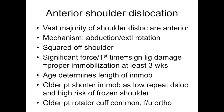How does an anterior dislocation present? The vast majority are an abduction, external rotation injury. They come in with their arm a little abducted and externally rotated. They are unable to touch their other shoulder, so they can't internally rotate. You can just look at them — their shoulder's squared off. Age determines how much immobilization they're going to get. Younger patients are more likely to re-dislocate and also more likely to need more trauma to do it, so they generally need to be immobilized longer.